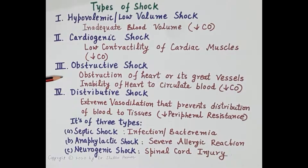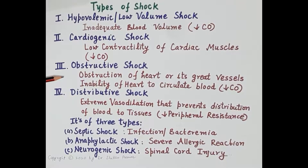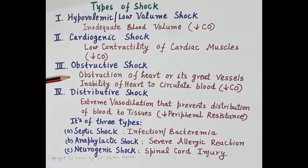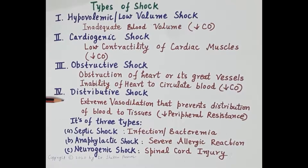The third type of shock is obstructive shock. There is obstruction of the heart or its great vessels — obstruction in the flow of blood, primarily due to compression of the heart or compression of great vessels like the superior vena cava, inferior vena cava, or aorta. This prevents filling and ejection of blood, resulting in poor tissue perfusion. Obstructive shock and its management is covered in detail in the second video, Shock Part 2.